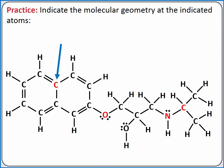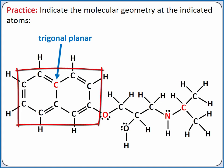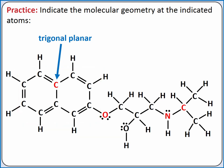For the carbon on the left, we have three bonding groups and no lone pairs. This produces a trigonal planar geometry. In fact, all of the carbons in the fused rings have a trigonal planar geometry, so these rings are flat, having all of the atoms on the same plane.